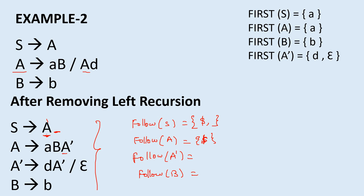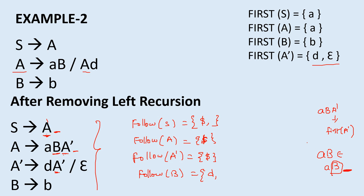Follow(A'): A' is also the last non-terminal in its production, with no terminal or non-terminal after it, so follow(A') = follow(A) = {$}. For follow(B): in the production A → B A', first(A') = {d, ε}. Include d, and since epsilon is in first(A'), apply epsilon and take follow(A) as well. So follow(B) = {d, $}.